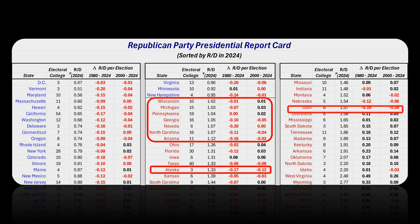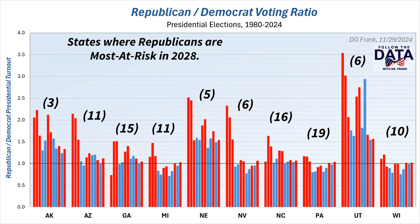Even though Trump won handily in Alaska and Utah in 2024, the trend toward Democrats is more rapid in these two states, suggesting that they will only remain Republican for two more election cycles, representing nine electoral college votes. The data in this table clearly show that the Republican Party is failing overall nationally, but especially in Alaska and Utah. Now I have combined into a single graph the turnout ratios for each of the states where Republicans are most at risk, and shown the number of electoral college votes associated with each of those states. Without a major sea change, the future looks quite bleak for the Republican Party.